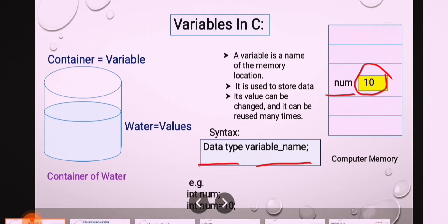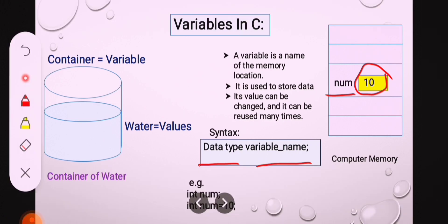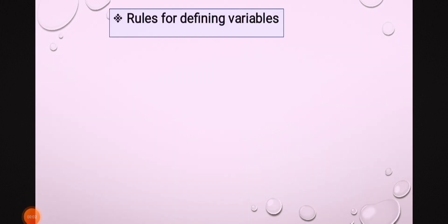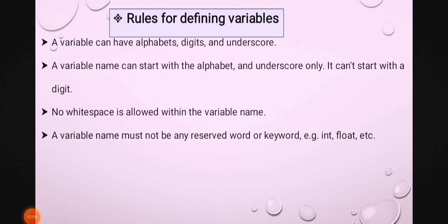Next, let's discuss rules for defining a variable. These are the rules for defining a variable. The first rule is: a variable can have alphabets, digits, and underscores. These three — alphabet, digit, and underscore — are the available character set for declaring a variable name.